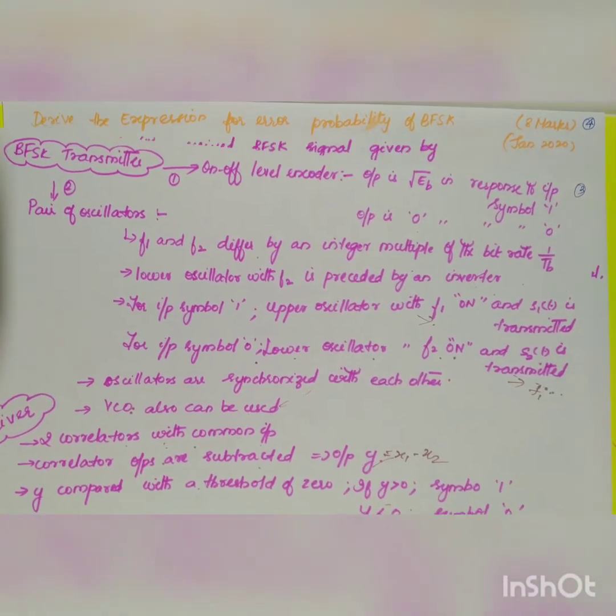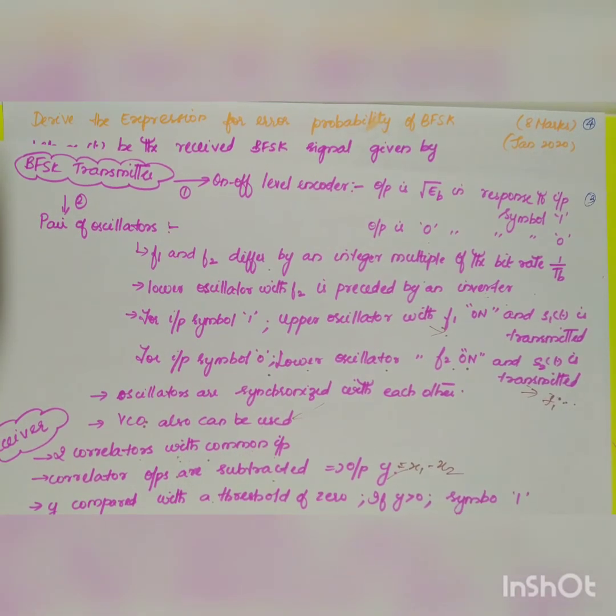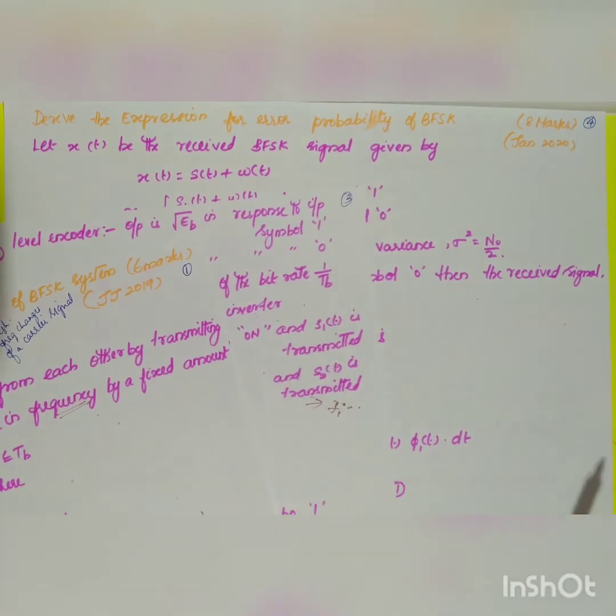This completes the explanation of the signal space representation, transmitter, and receiver for BFSK. In the next video, we will see the probability of error for BFSK. Notes are available on the Telegram channel.